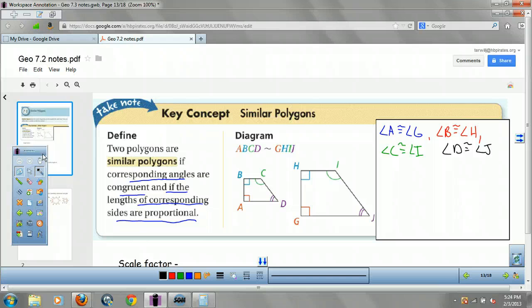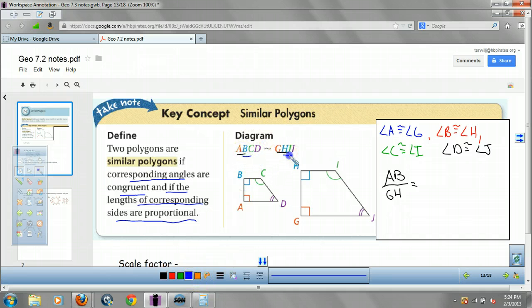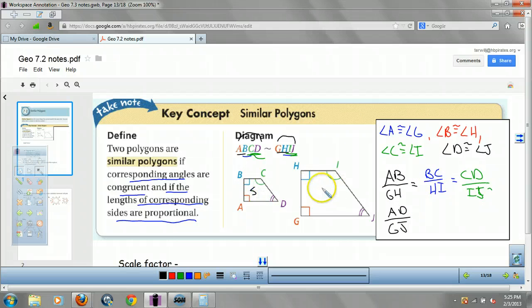I guess we got other stuff we can say, too. Not AB is congruent, AB is proportional to. So, AB over GH equals BC over HI equals CD over IJ, and we got one more, AD and GJ. Do you notice how I put all the small ones? This is small guy. And this is large guy. I put all the smalls on top, all the larges on the bottom. That's important.